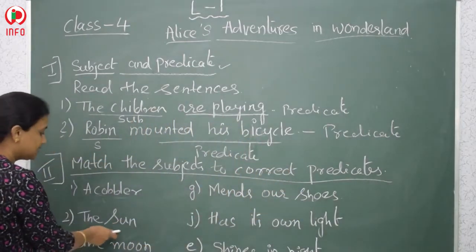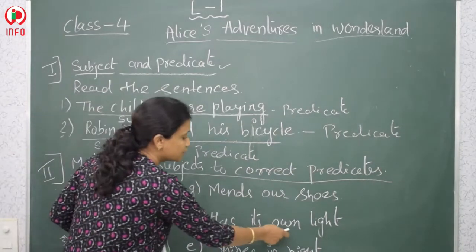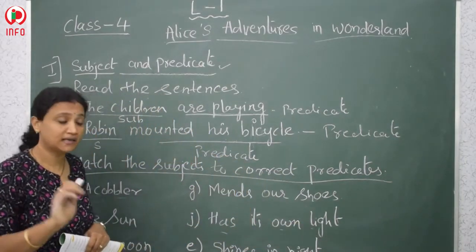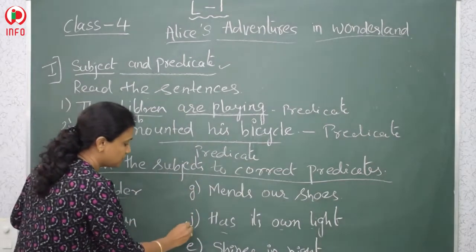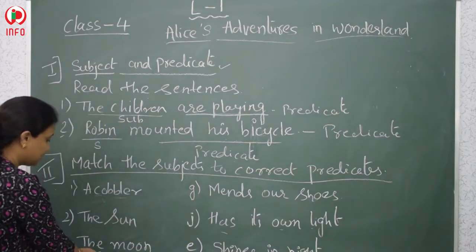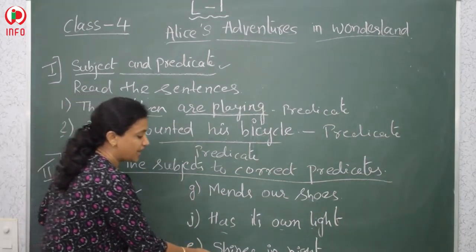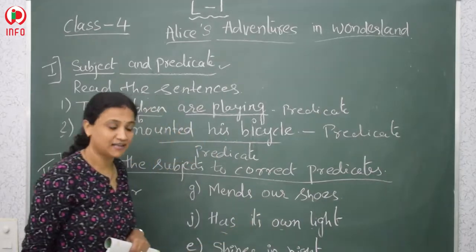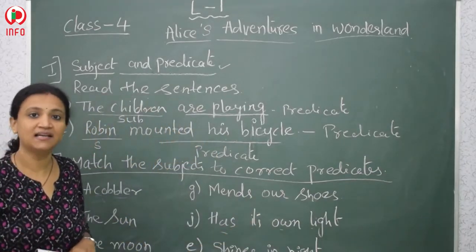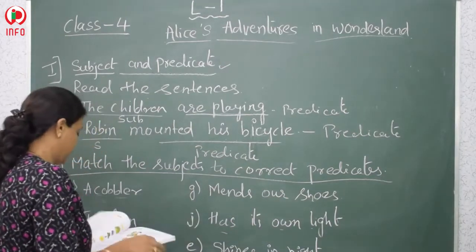The second is the sun. What does the sun do? The sun has its own light; it never depends on other light. That is option J — we are matching it with J. The third is the moon. The moon shines in the night. If you go outside you can see it shining at night.